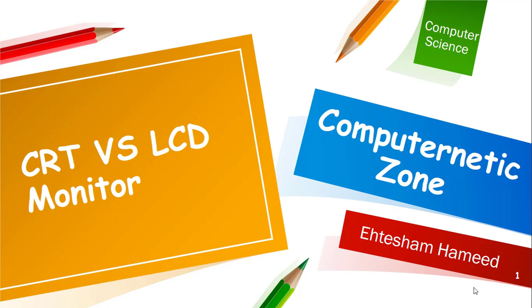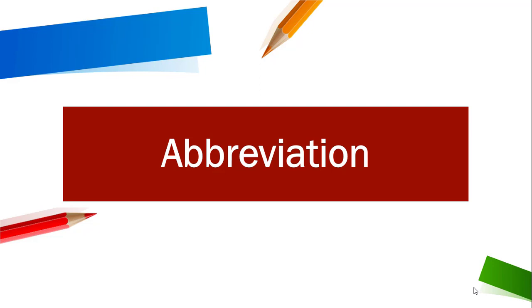Information on the monitor is also called soft copy because it exists electronically and displays only for a temporary time period. We have examples like monochrome or colored monitors. So first of all, let's get into the types of monitor.